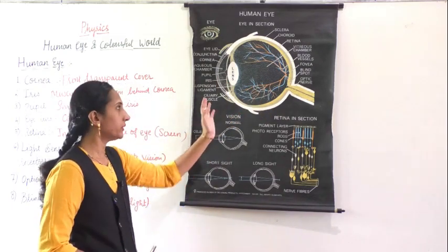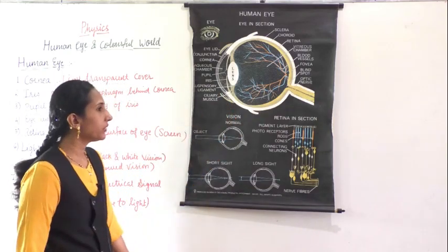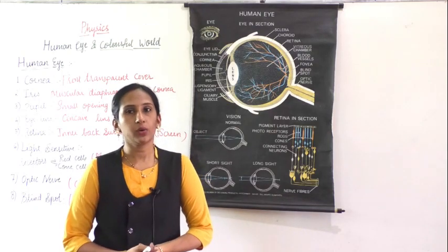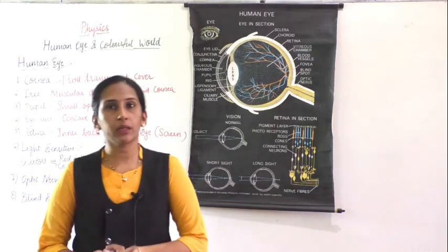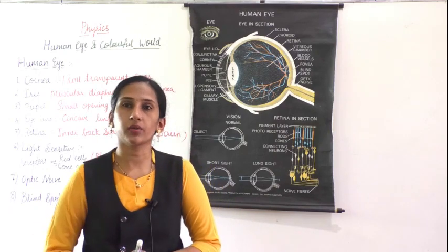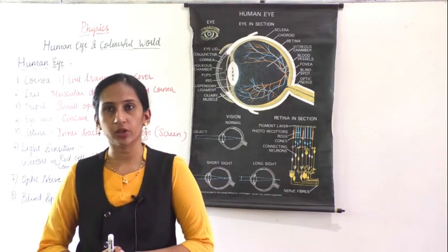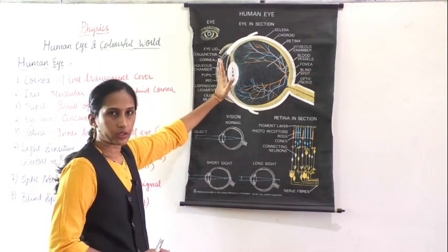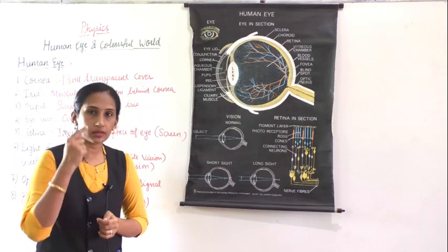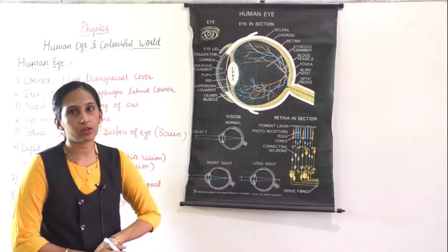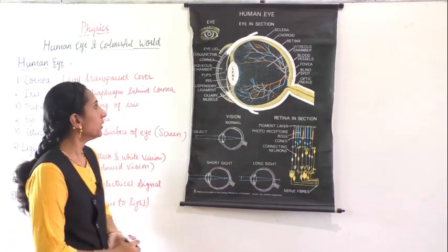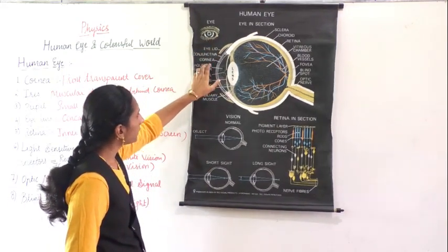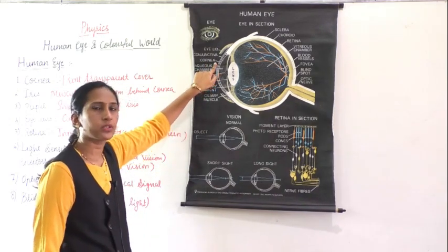We will start with the outer layer. When you look in the mirror you can see an outer transparent covering on your eye. That transparent covering is called the cornea. It protects all the inner parts of the eye.